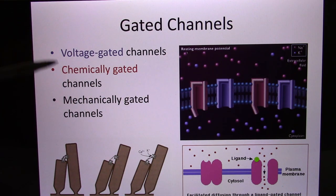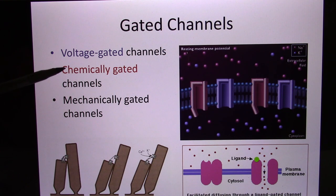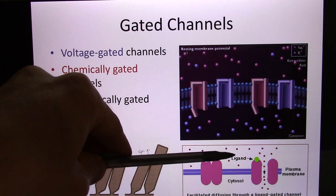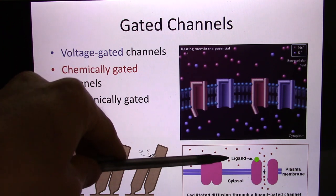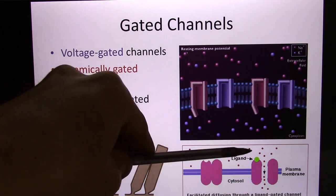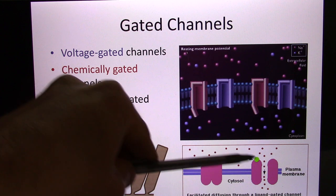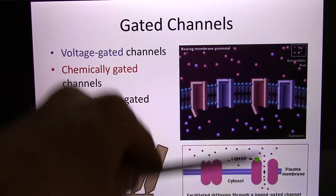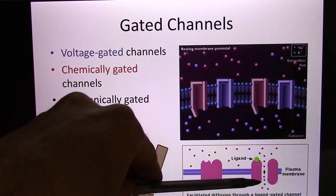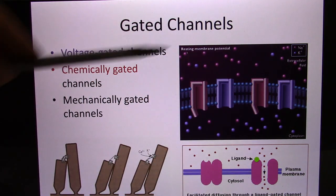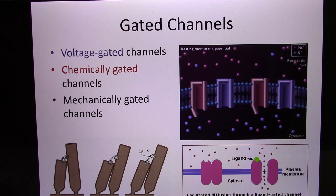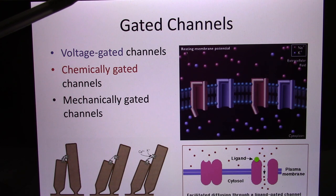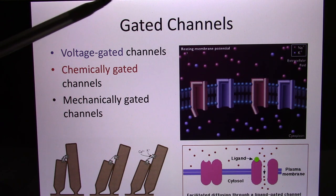The chemically-gated ion channel, also called the ligand-gated ion channel, is opened when a chemical molecule binds with it — like a neurotransmitter or a hormone. When it binds, the ion channel opens and ions flow through, still going from high concentration to low concentration. So gated ion channels are actually facilitated diffusion — the driving force is the concentration gradient, different from active transport.